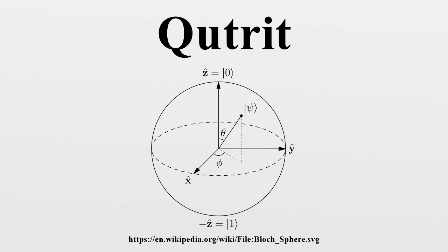Qubits achieve this by utilizing Hilbert space, corresponding to spin-up and spin-down. Cutrits require a Hilbert space of higher dimension. A string of n cutrits represents 3^n different states simultaneously.